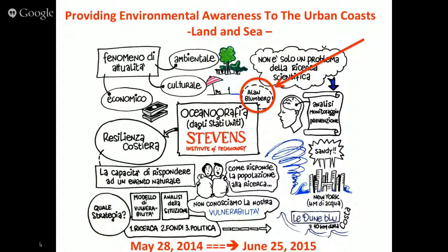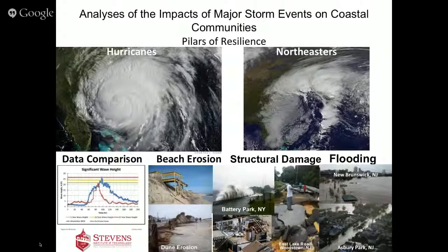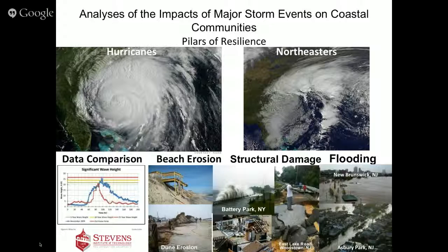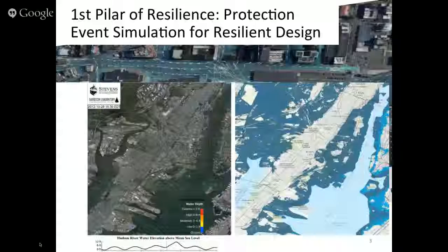I want to talk about providing environmental awareness. We have gone from the sea to the land — we have sensors in the water and now we're putting sensors on the land, and you will see how they work together. My main mission is to look at big events: hurricanes, nor'easters. We worry about beach erosion, structural damage to big cities on the coast, and also precipitation flooding — that's a new thing for us. Flooding comes from both sides, so we're looking at both sides of the equation now.